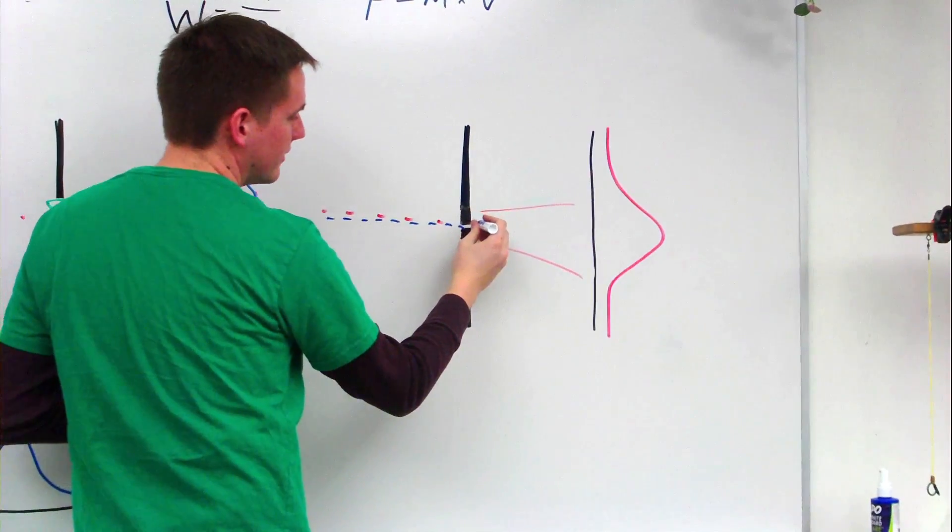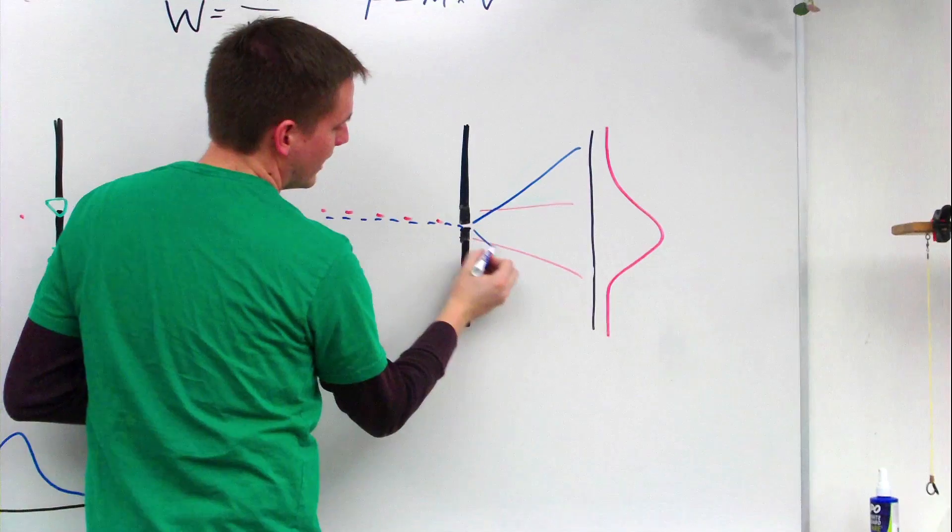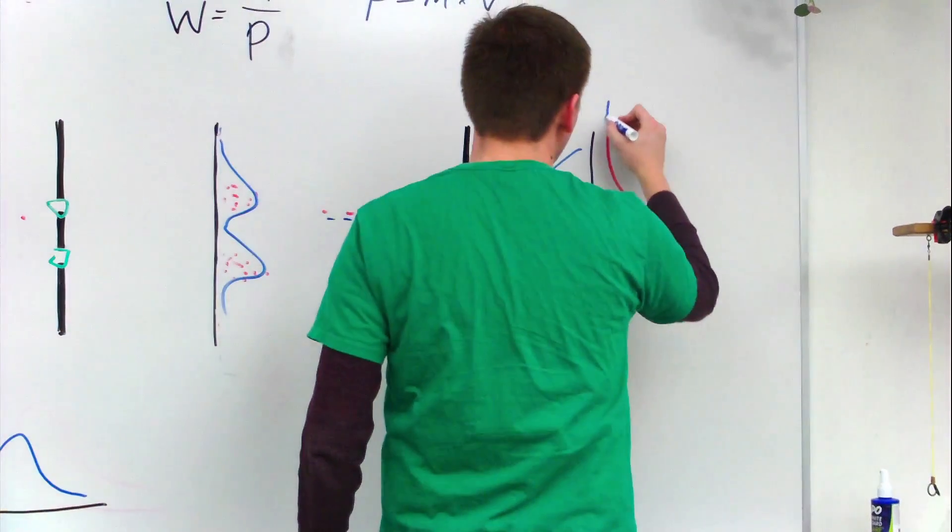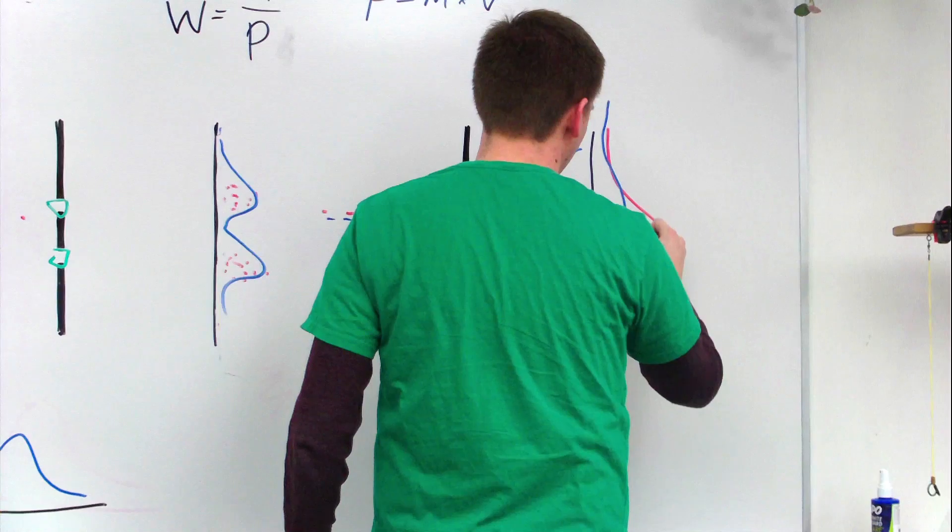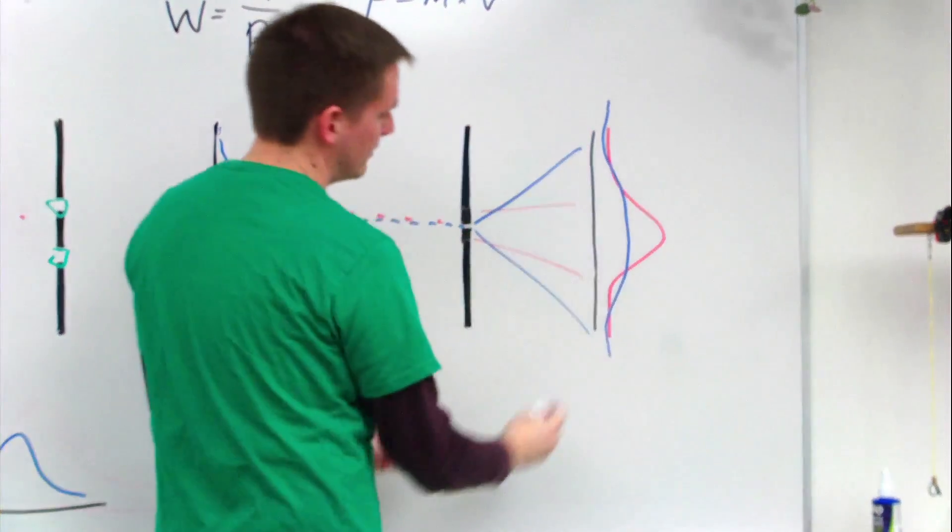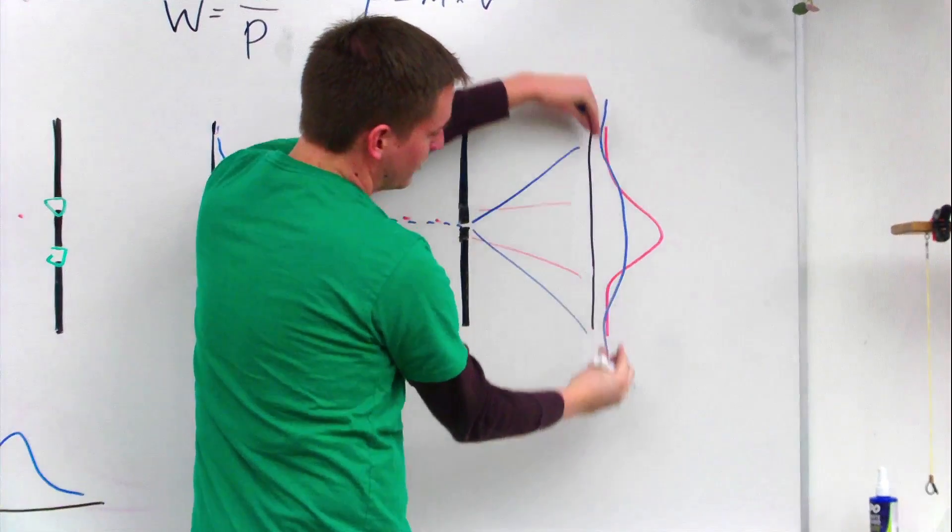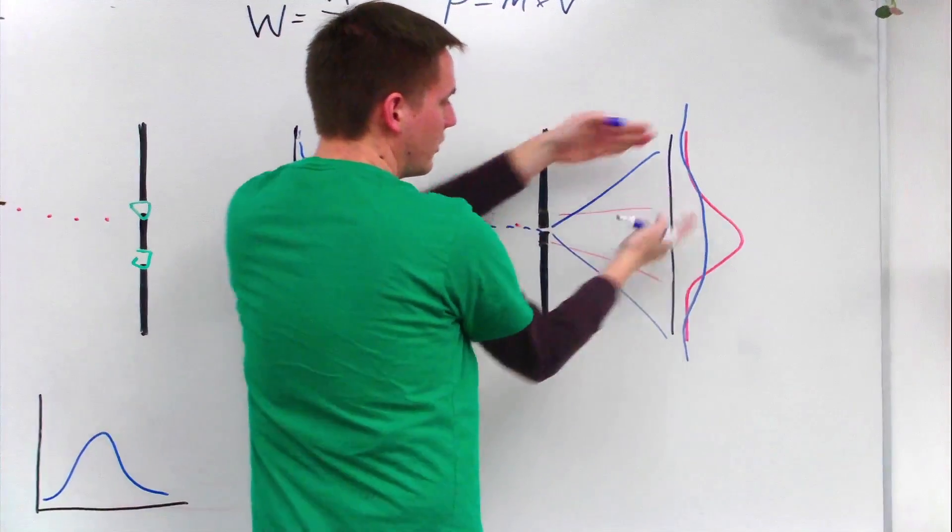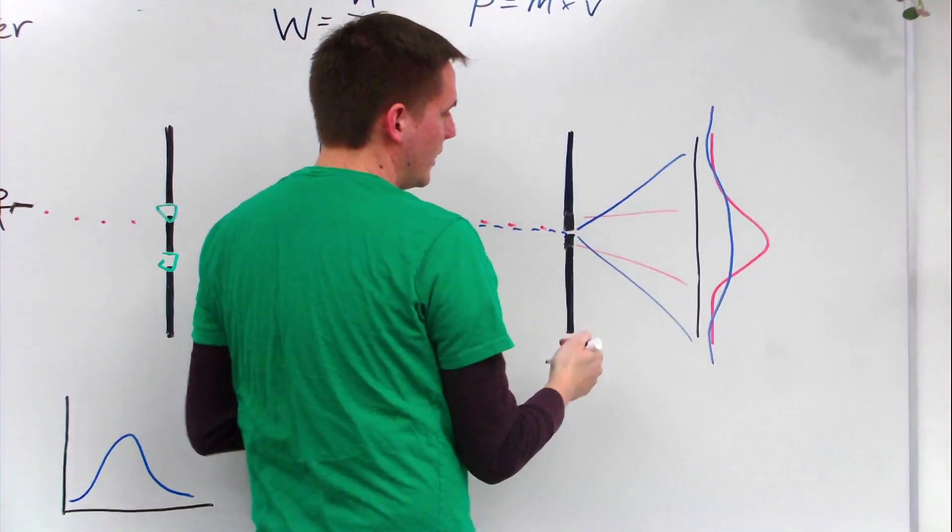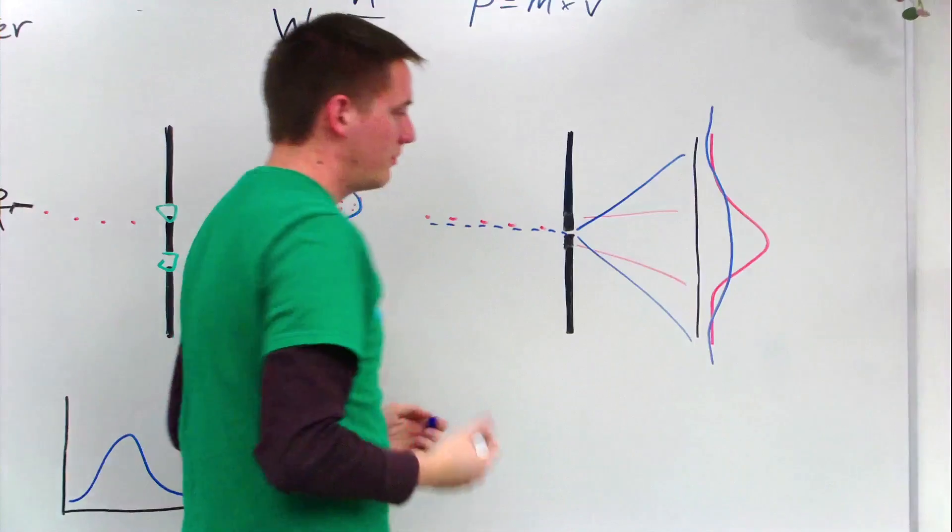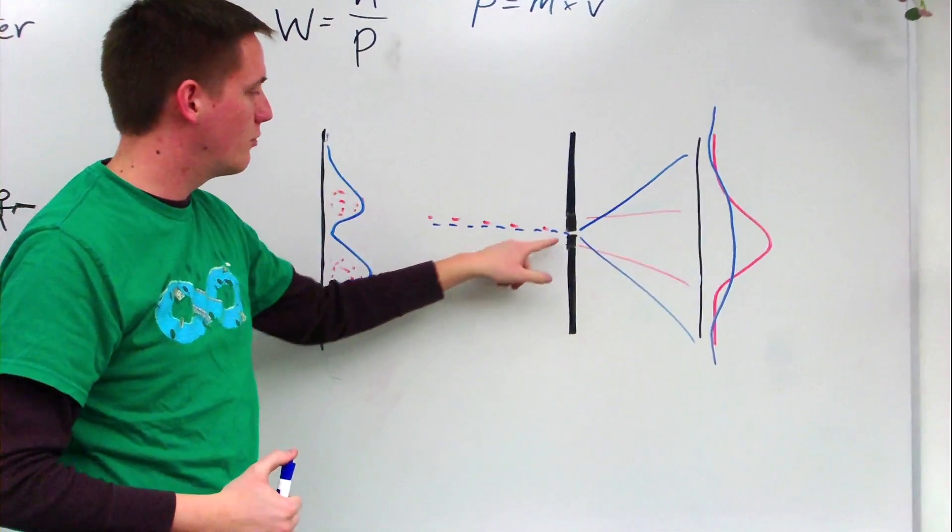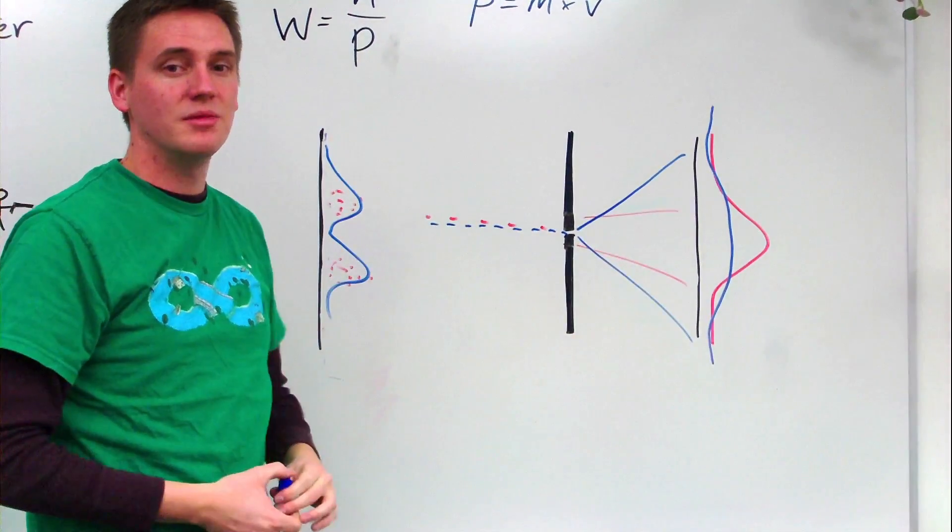So by narrowing the slit, it's going to make it diffract even more. So we'll spread out even more. And so the probability curve would look something like this. It's a lot more stretched out because we don't know where it's going to land. It has a bigger area of probability. And so we're less certain about its motion because we know more about its position.